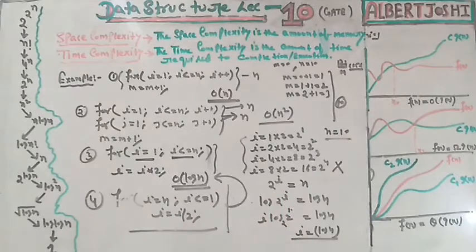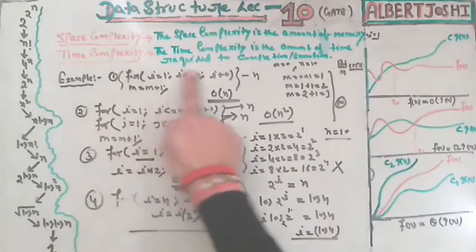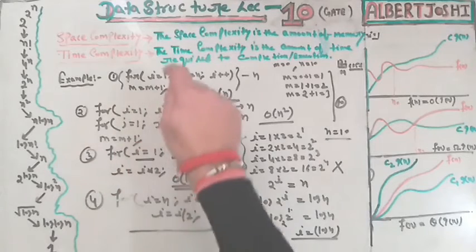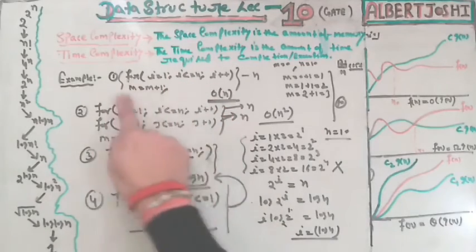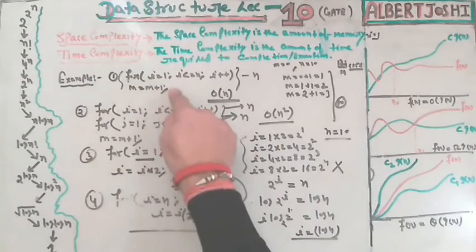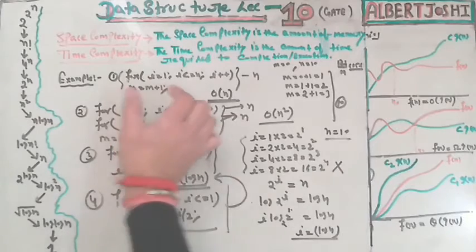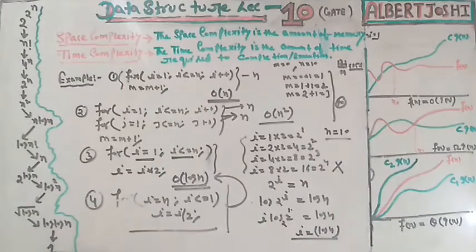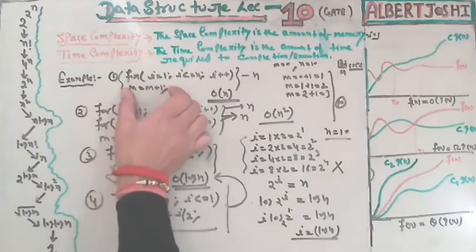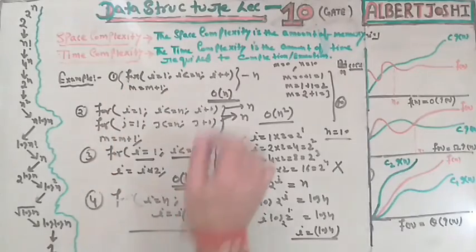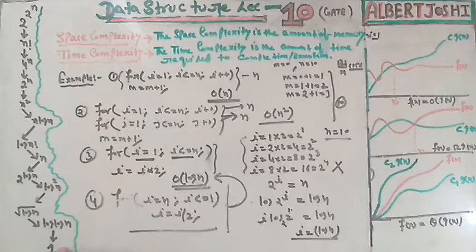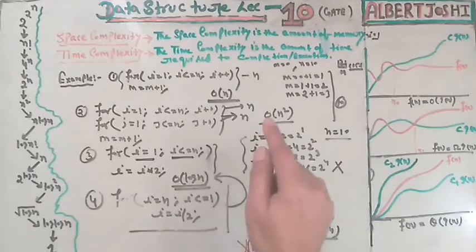If you are writing only one statement in your code — like m = m + 1 or just printing 'hello' — the compiler reads it only once. For such cases your total execution time is 1, which means O(1).